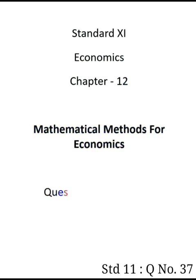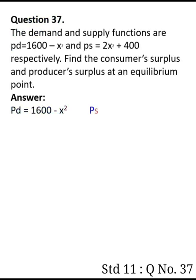Hello students, in 11th standard economics chapter 12, Mathematical Methods for Economics, here is a question: The demand and supply functions are pd equals 1600 minus x square and ps equals 2x square plus 400. Find the consumer surplus and producer surplus at an equilibrium point.